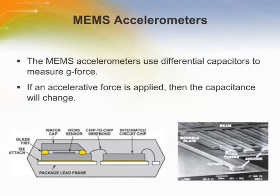The core element of a typical MEMS accelerometer is a moving beam structure composed of two sets of fingers. One set is fixed to a solid ground plane on a substrate. The other is attached to a known mass mounted on springs that can move in response to an applied acceleration. Accelerometers with the largest market share today use differential capacitors to measure g-force, which is then converted into volts or bits and passed to a microprocessor to perform an action.